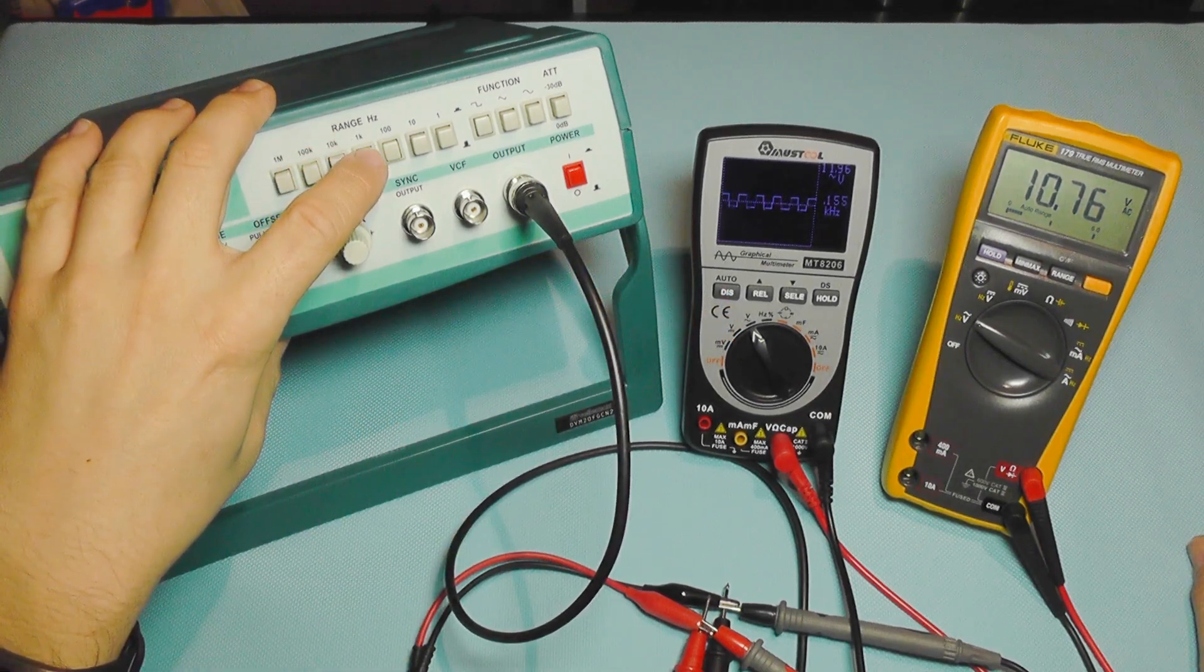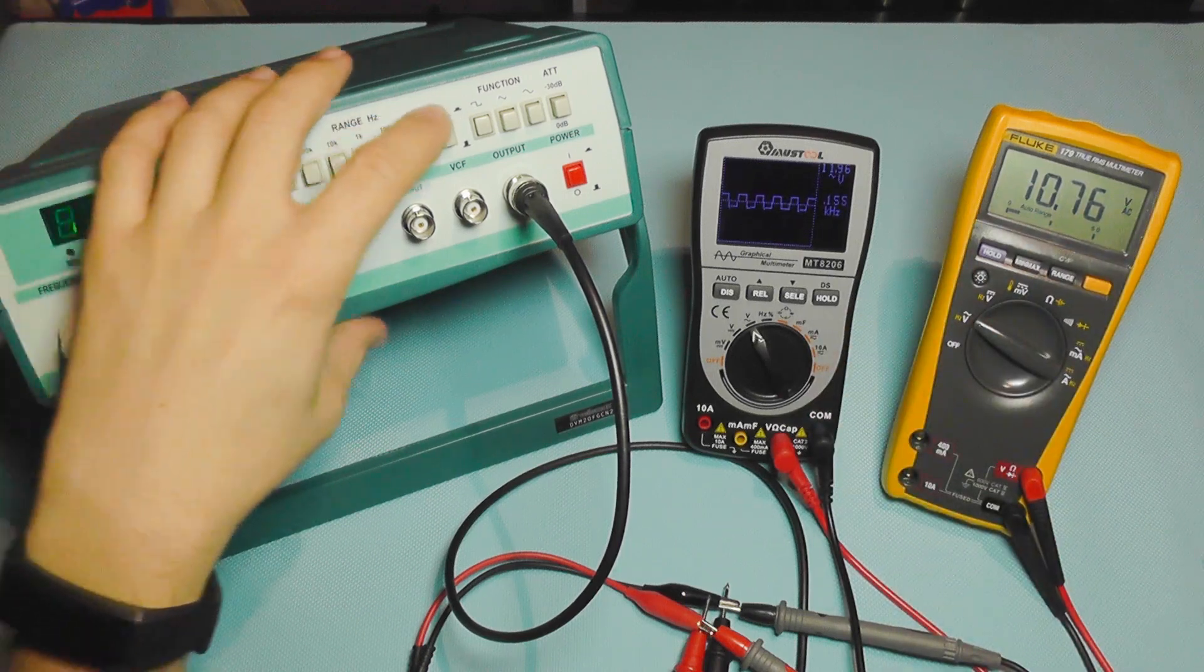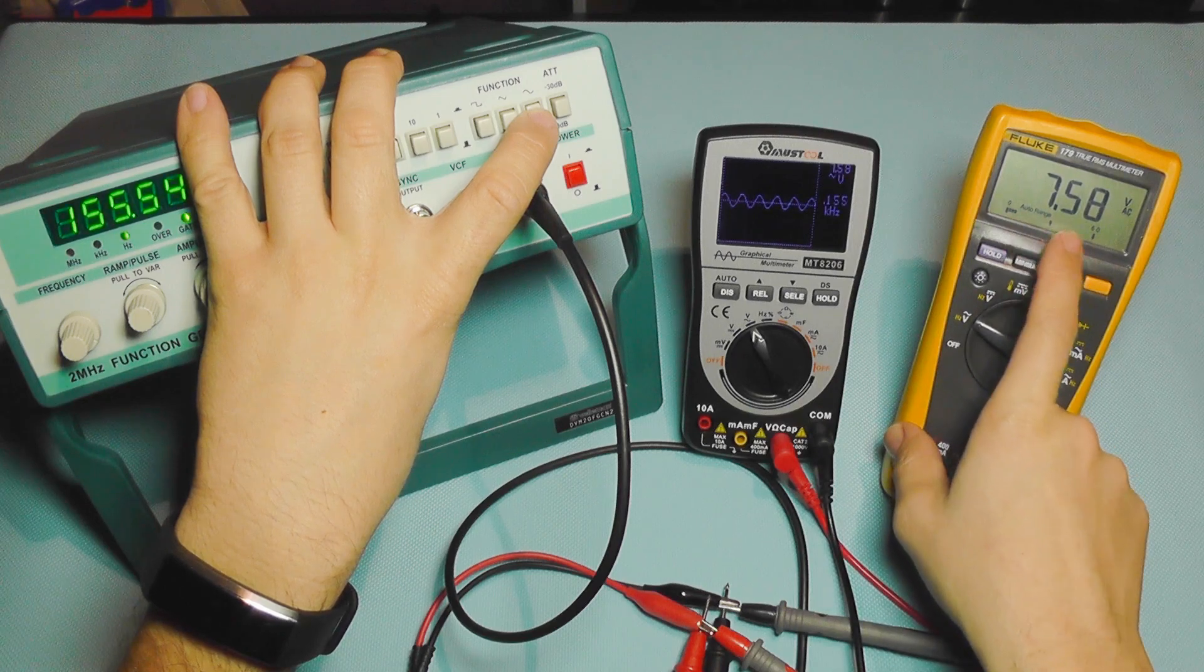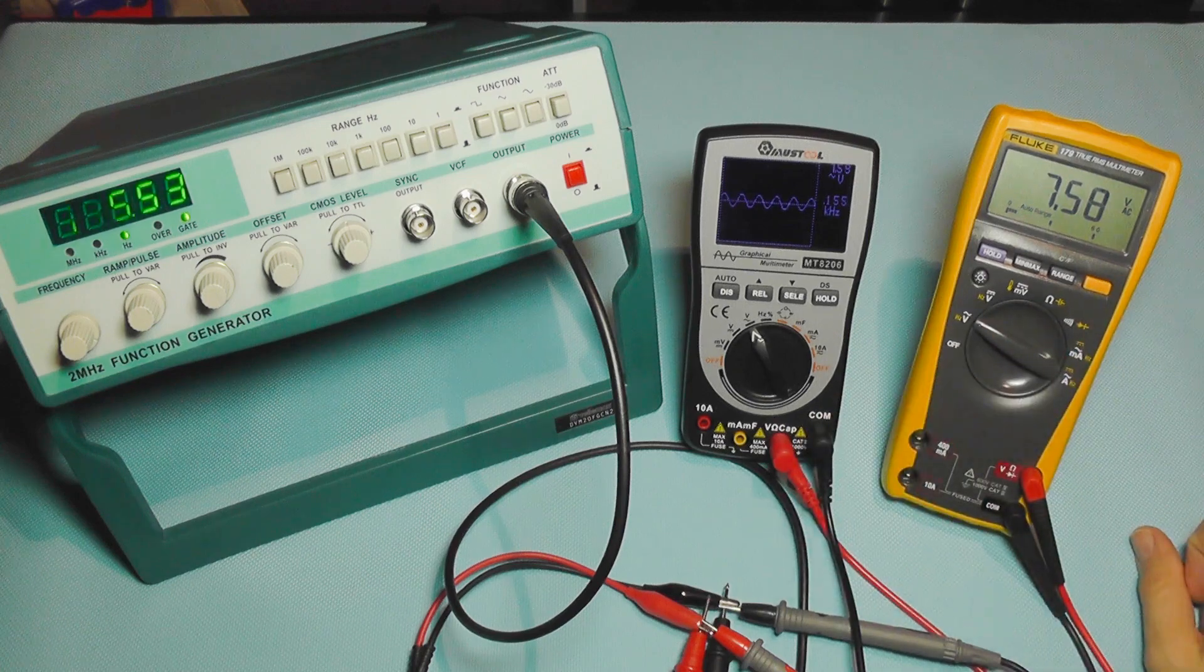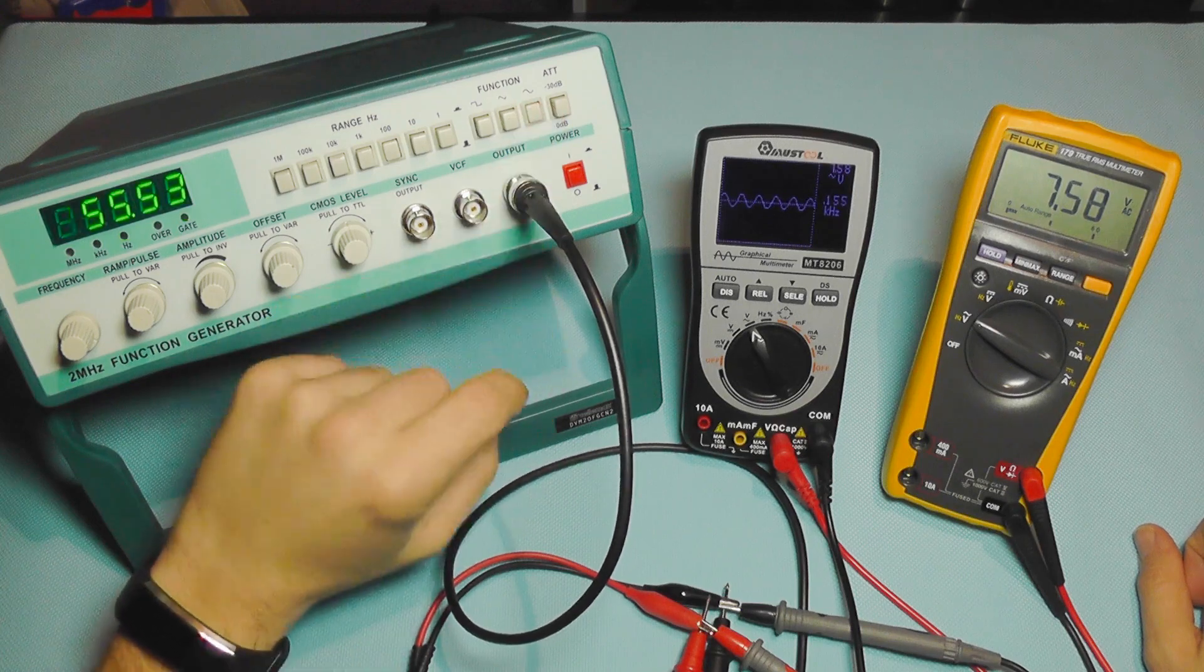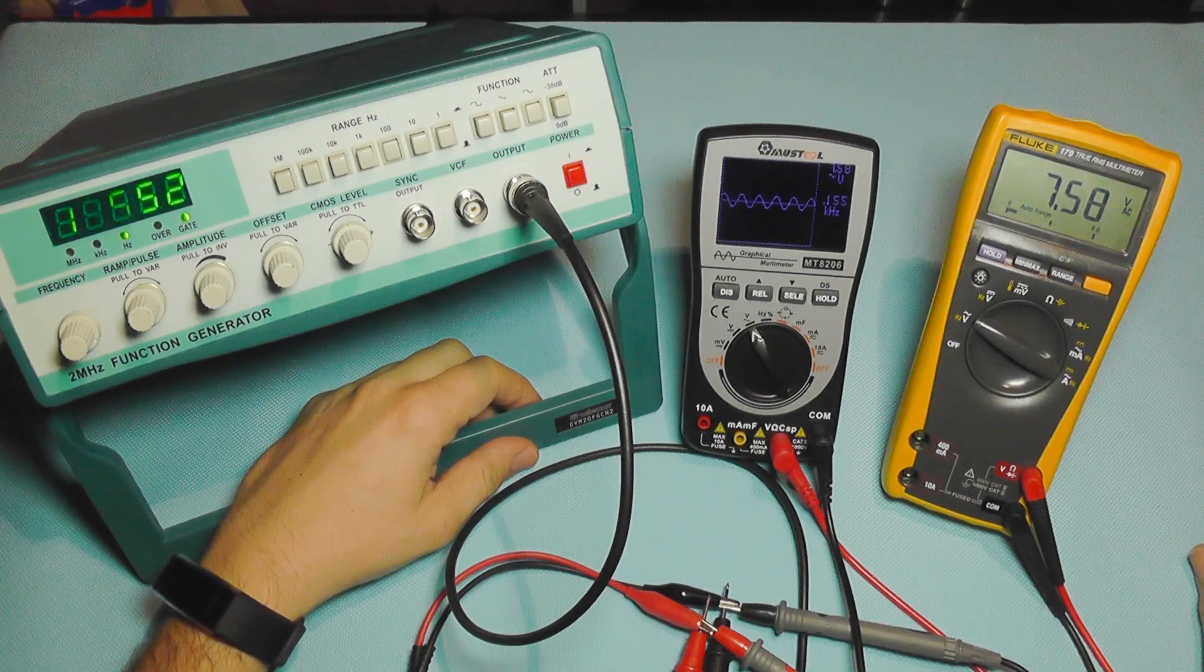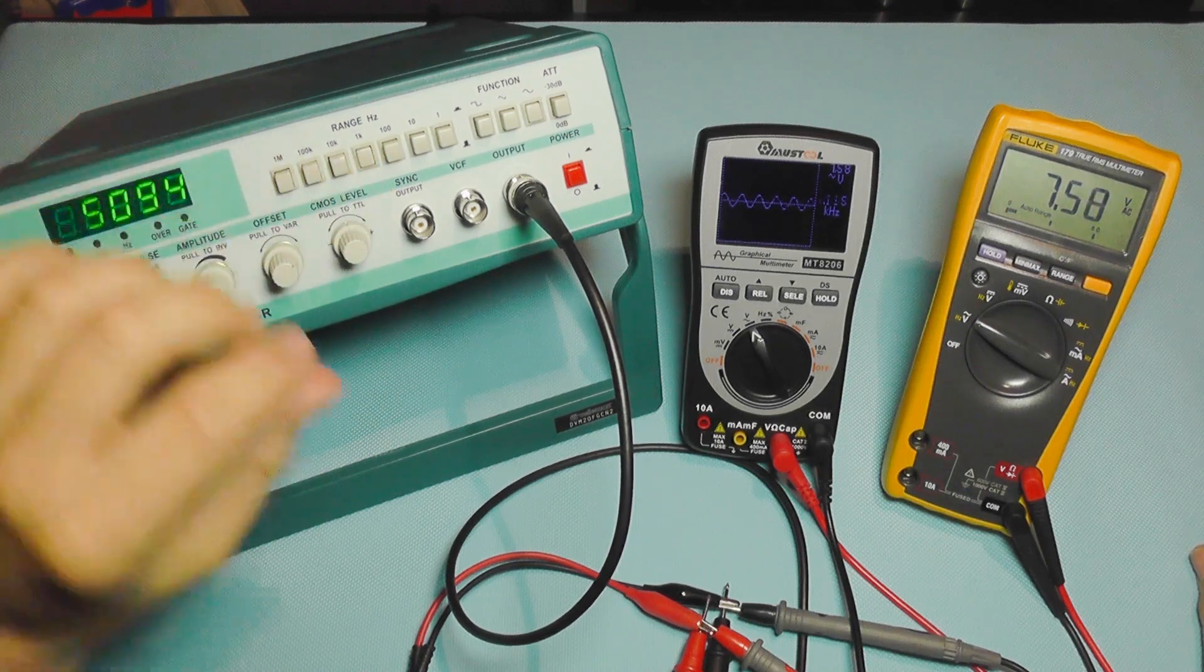Let's go to voltage. 10.76 volts here and 11.96 volts on this one. So it seems that when the frequency increases, the voltage is not the same. Let's go to sine wave again. On sine wave it's identical: 7.58 and 7.58. There is something when you change the type of wave, so I'm going to only use sine wave for this test.